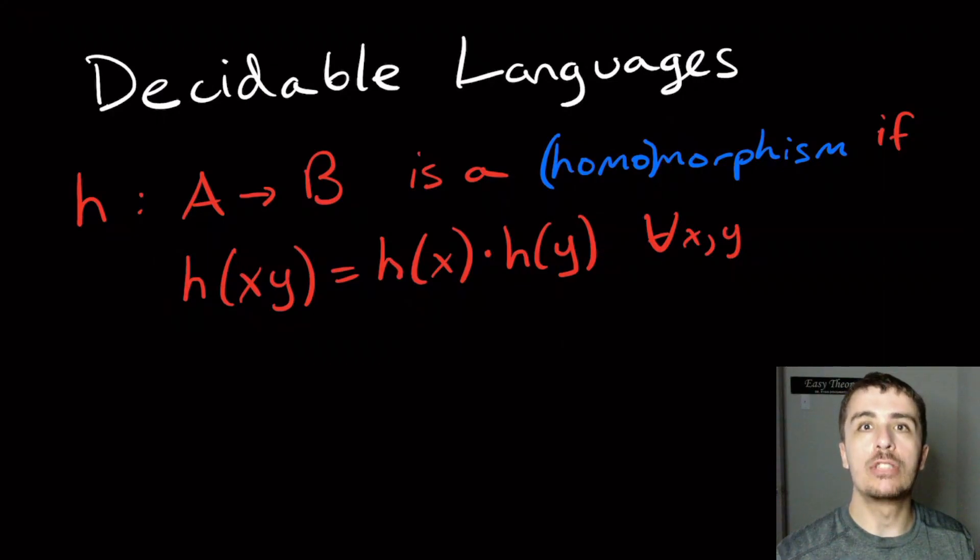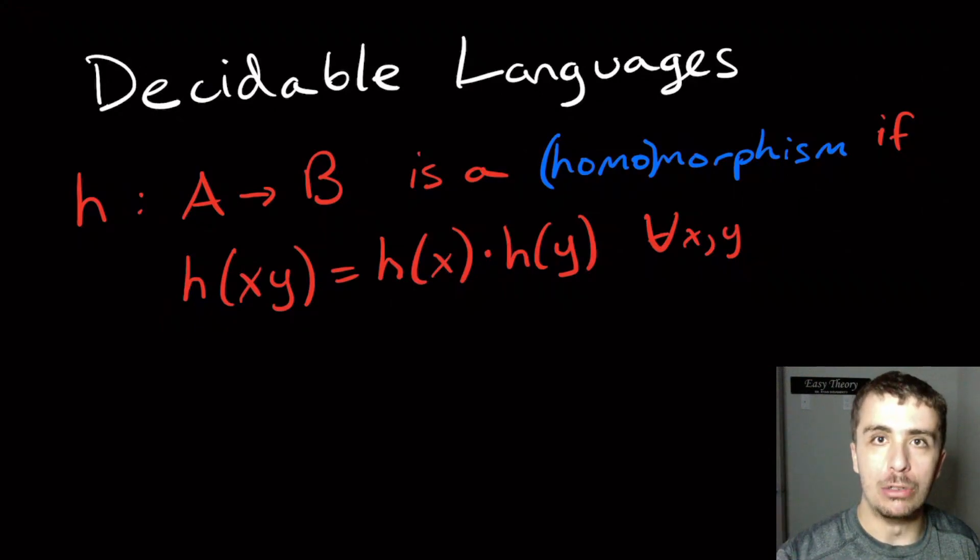So most language classes that we come across are closed either under homomorphism or inverse homomorphism, or both, but we're going to show one that is actually very interesting about the decidable languages, that they are not closed under homomorphism, but they are closed under inverse homomorphism, which is something I've never seen before, which is pretty cool. So let's prove both of those.